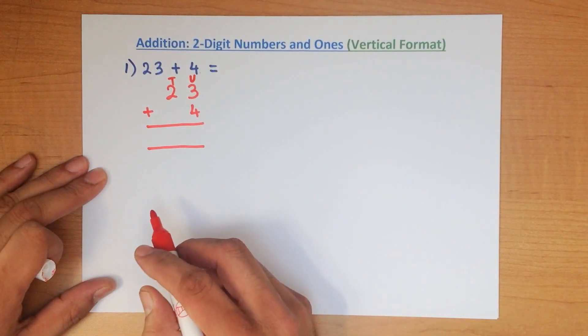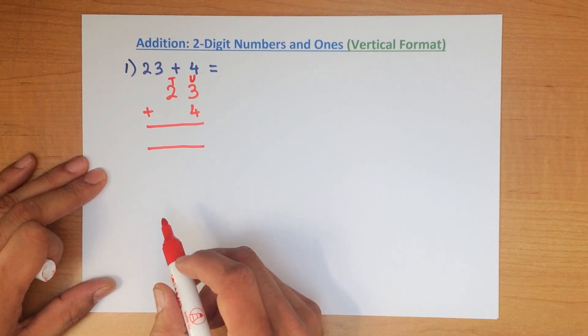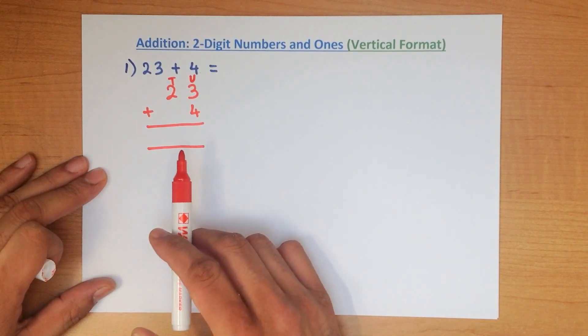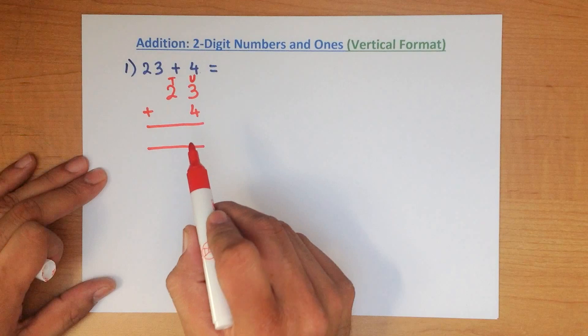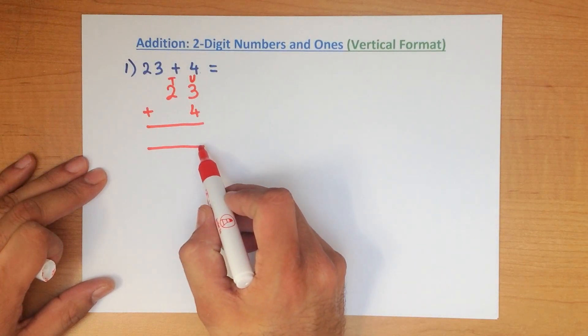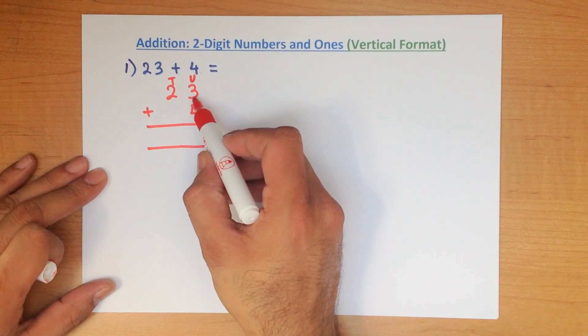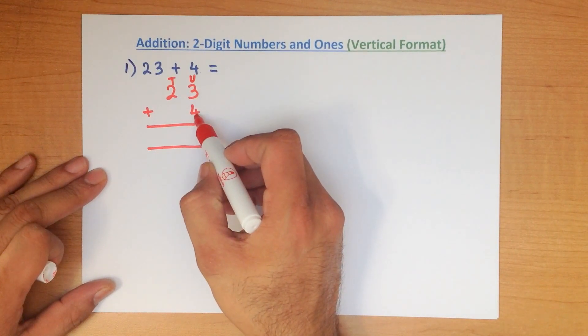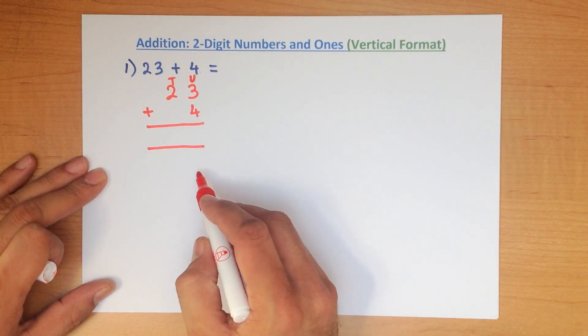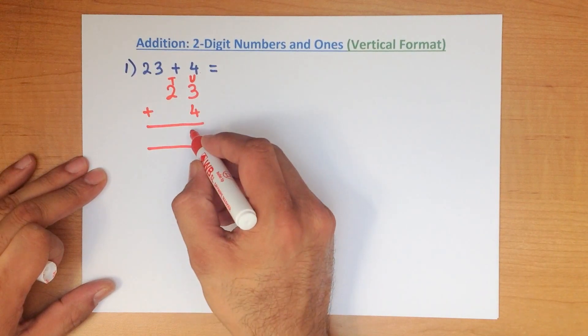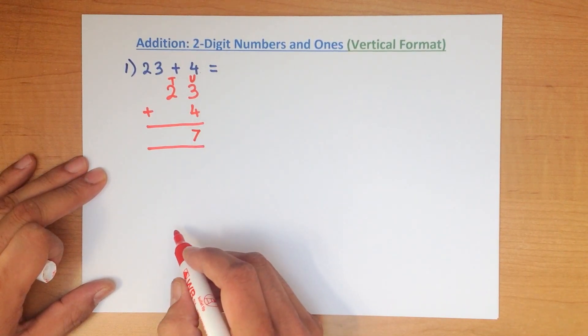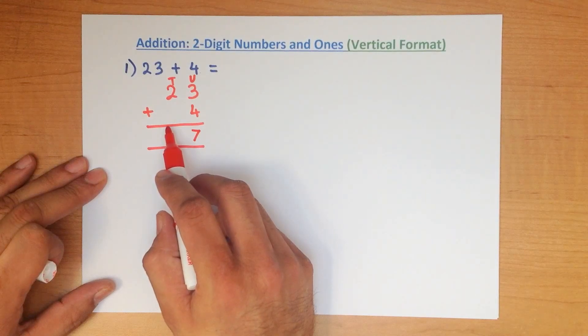And in addition, using the vertical format, what we do is we add the columns one by one. We always start with the column on the right hand side. So let's do that. What is 3 plus 4? That's right, it is 7.